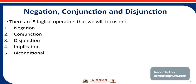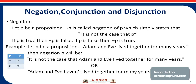Now let's talk about the first operator in this list, that is the negation operator. Let P be a proposition, then negation P or not P is called negation of P, which simply states that it is not the case that P. This is the symbol used to represent the negation. If P is true, then negation P is false. If P is false, then negation P is true.